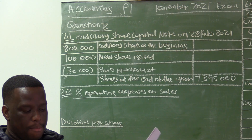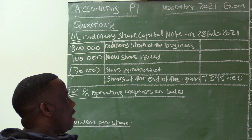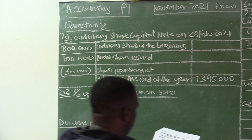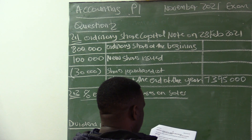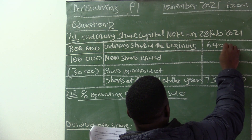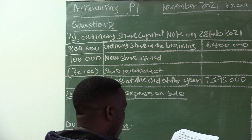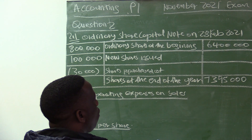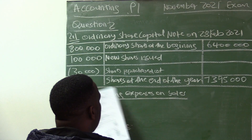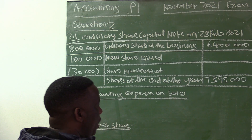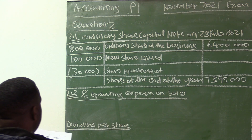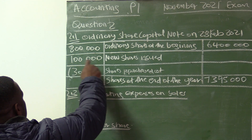The shares were repurchased at 120 more than the average. We use that in the retained income note. Here we want the average issue price. Since we don't have the share capital for new shares, let's look at what we do have: ordinary share capital at the beginning is 6,400,000 (from information C), and at the end is 7,395,000. We have 800,000 plus 100,000 which is 900,000 shares.